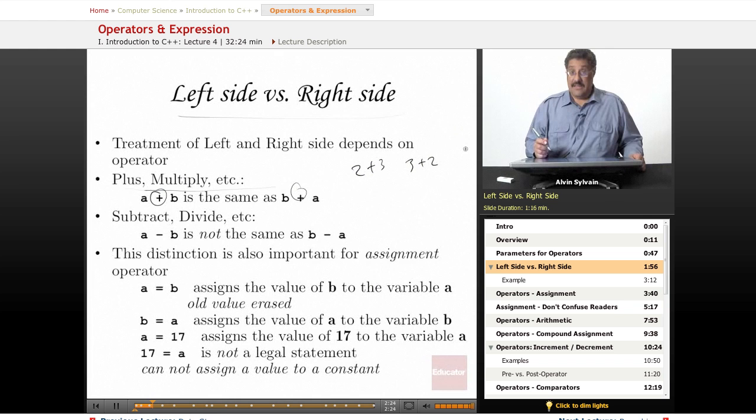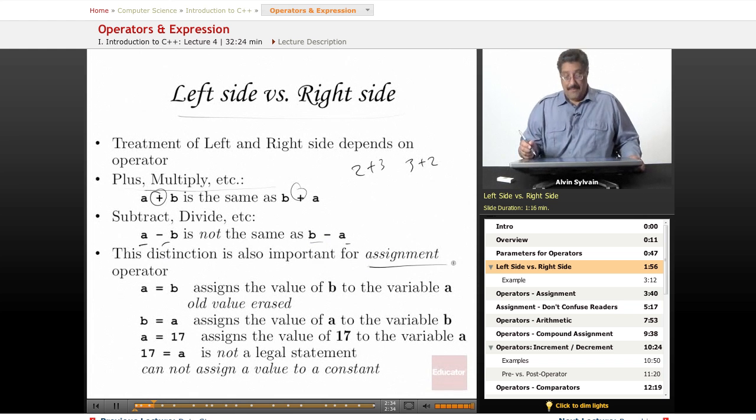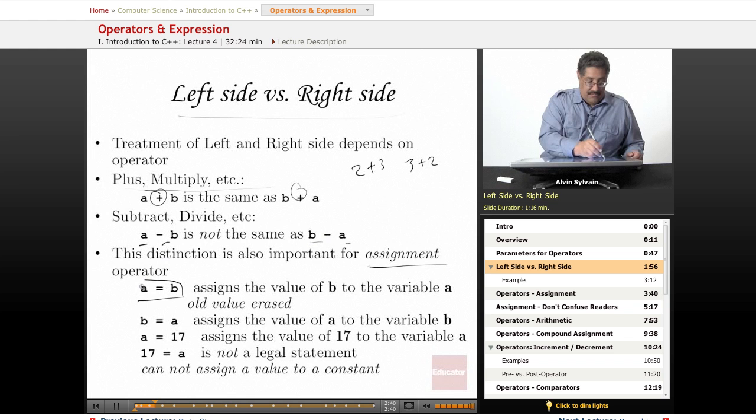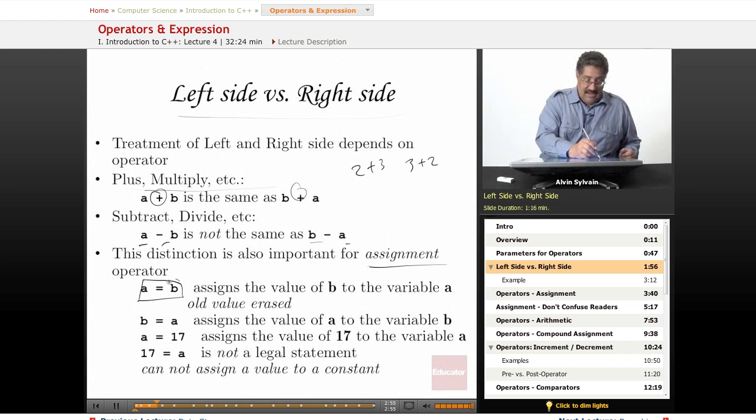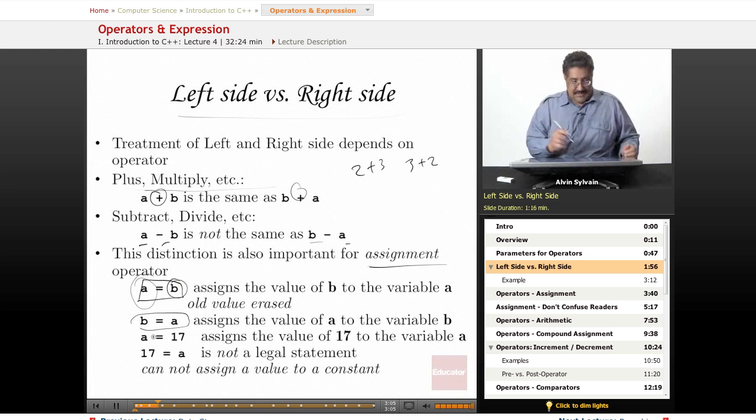Subtract, divide, we get different results. A minus B is not the same as B minus A. This distinction is also very important for the assignment operator. A lot of newbies will make this mistake when they're first writing code. You have A equals B. That's a single equal sign. That's an assignment. That's not a comparator. It's not an algebraic equation where you say A and B happen to have two equal values. That is taking the value, the expression of B, and assigning that to the variable A. If we reverse those, it does the exact opposite. It takes whatever is in A, assigns it to the variable B.